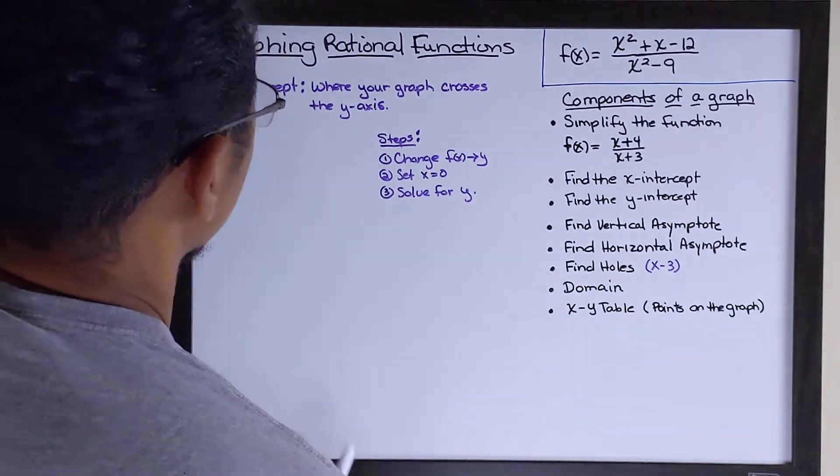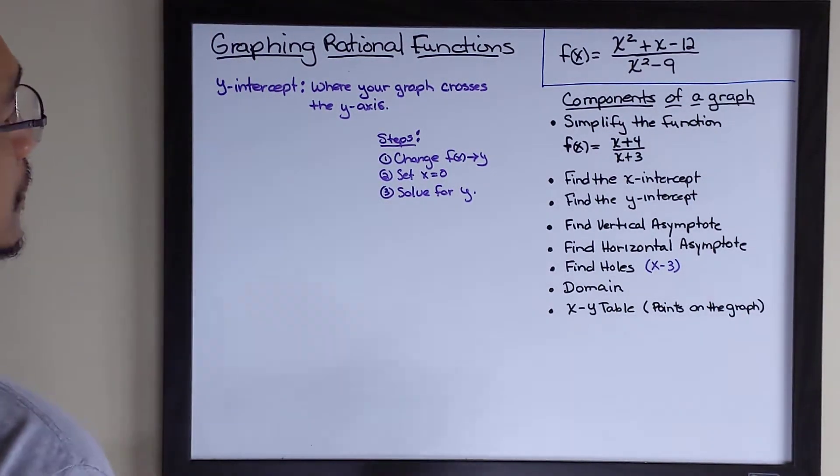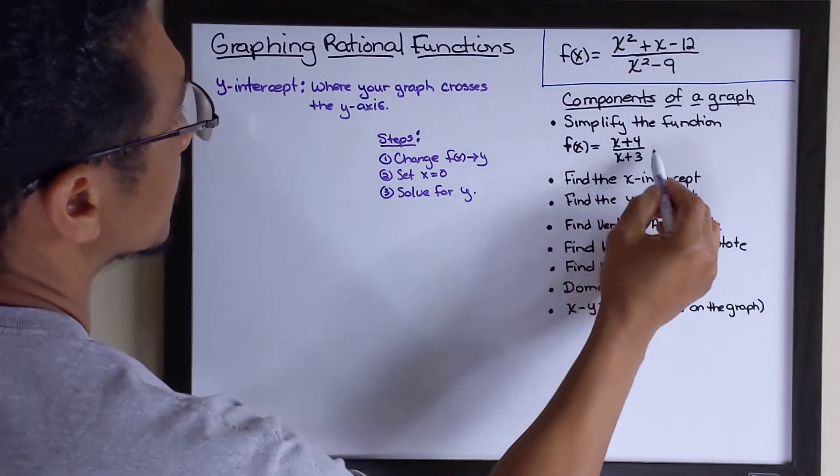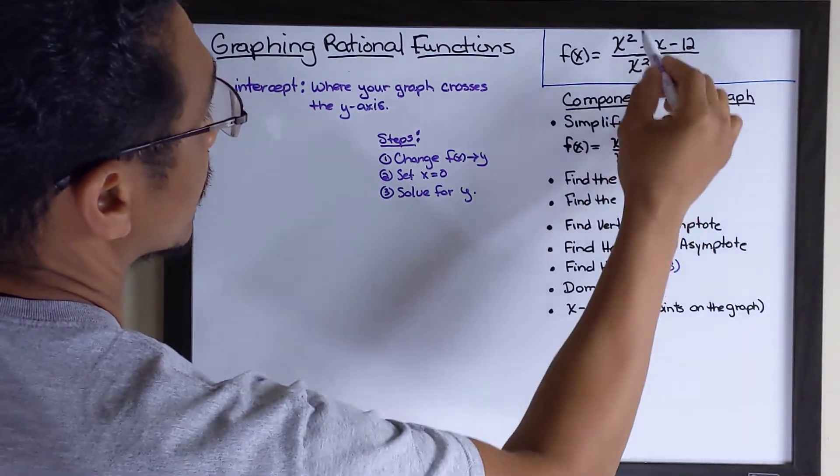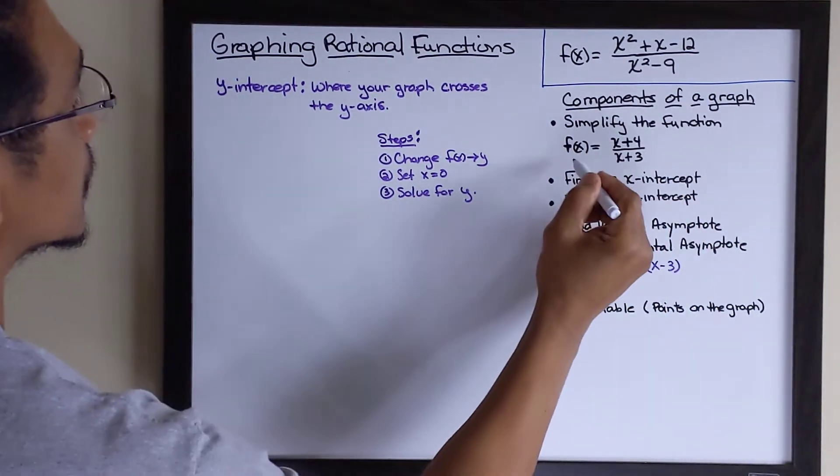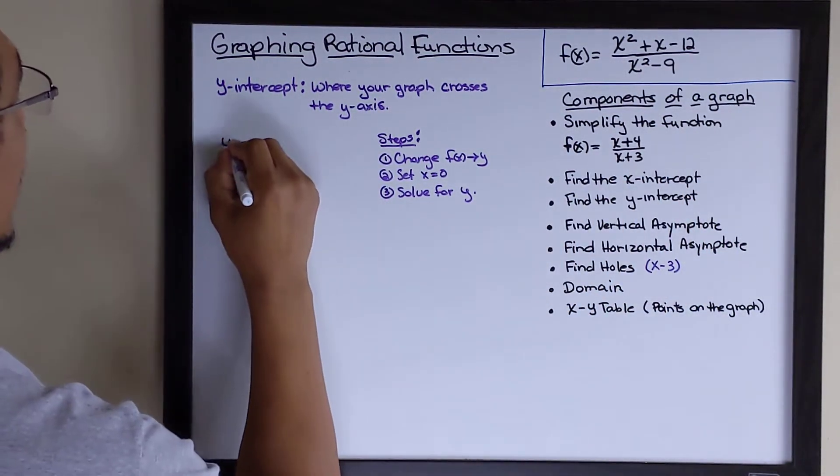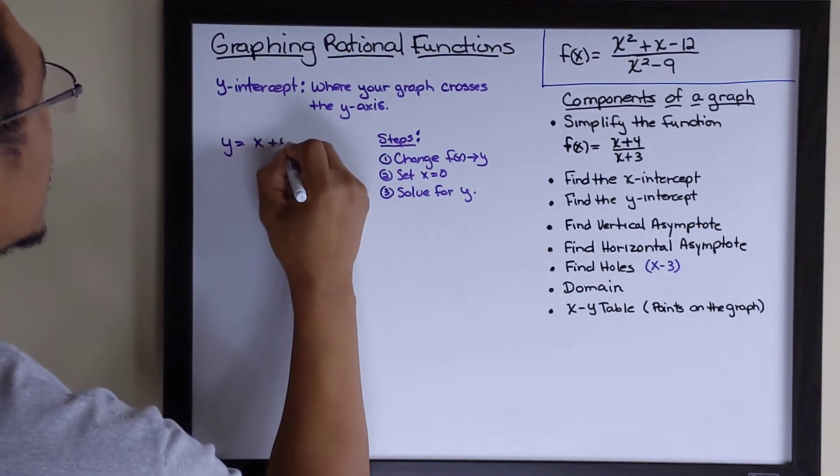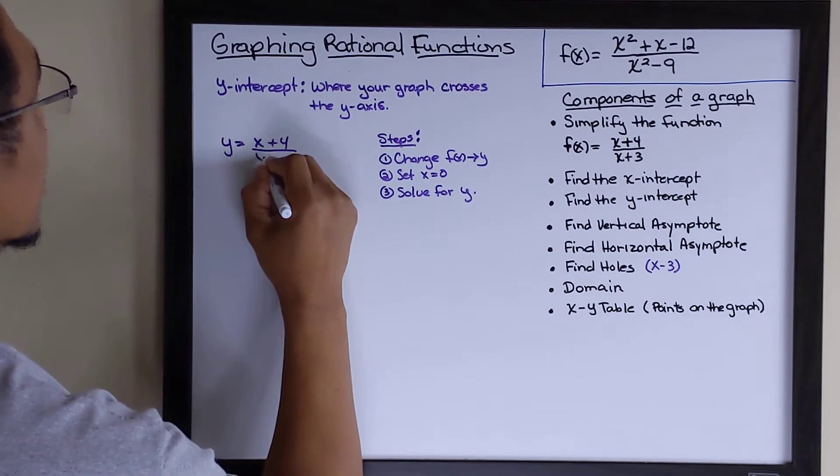To do this, here are the steps I've listed. There's only three of them. Step one, change our f(x) to y. We're going to use the simplified version of this function. y equals x plus 4 over x plus 3.